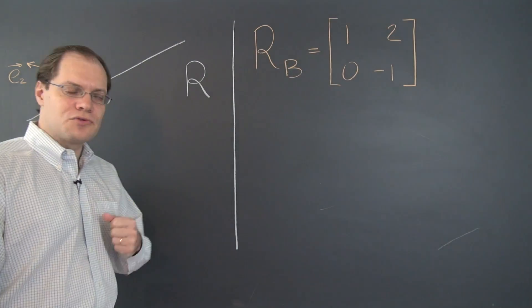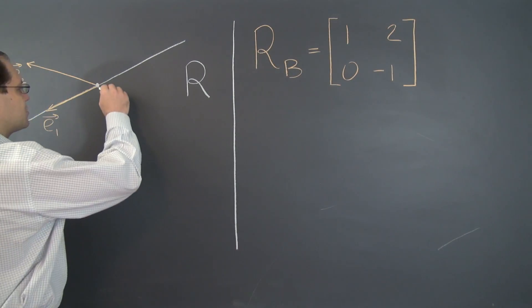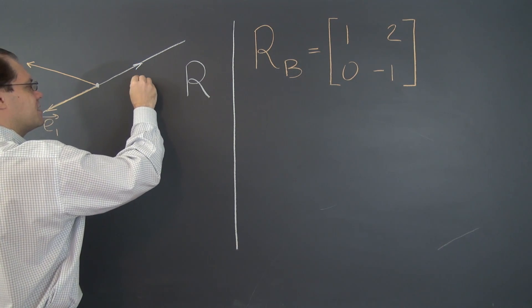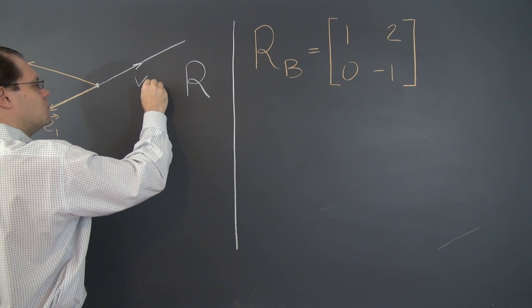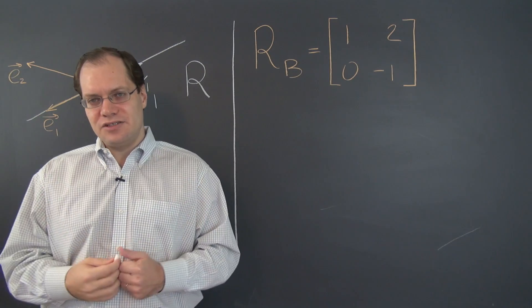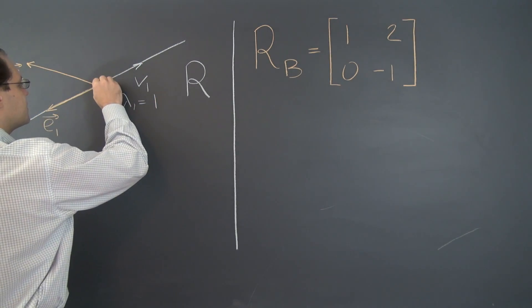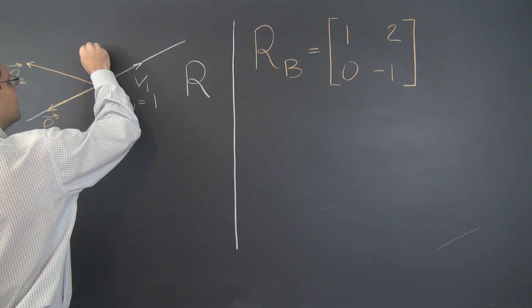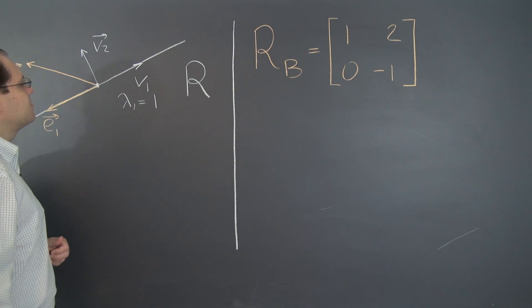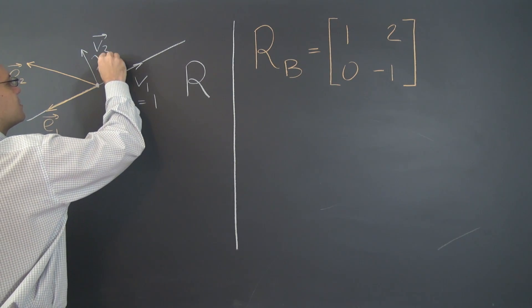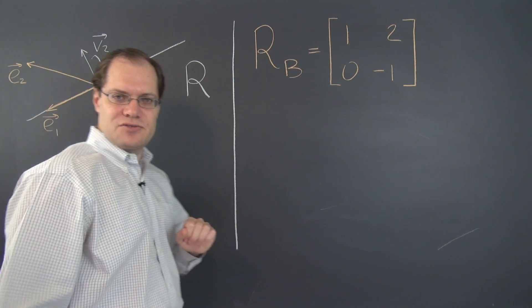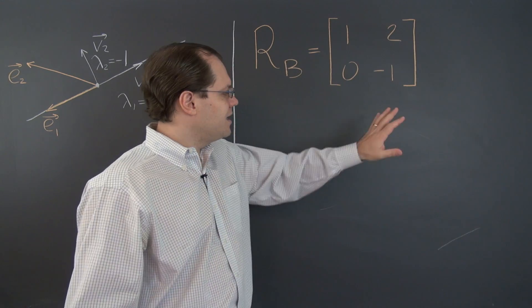Getting back to reflection, we'll remember what the eigenvalues and eigenvectors are. The first eigenvector V1 lies on the line of reflection and corresponds to eigenvalue 1 because it remains unchanged under reflection. The other vector V2 is orthogonal to the line of reflection and gets flipped, so its eigenvalue is negative 1. Now let's replicate this known result in component space.